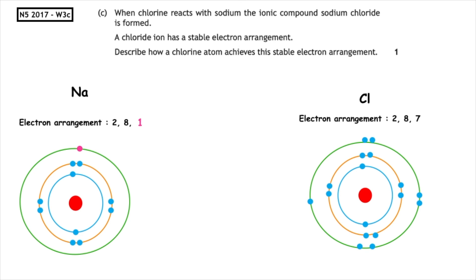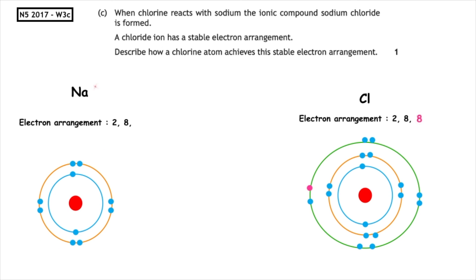This past paper question is from the National 5, 2017, written 3C. When chlorine reacts with sodium, the ionic compound sodium chloride is formed. A chloride ion has a stable electron arrangement — describe how a chlorine atom achieves this stable electron arrangement. The electron arrangement of the chlorine atom is 2-8-7. All elements want to achieve stability by having a full, stable outer electron shell, so it gains an electron from the sodium atom to become a chloride ion.